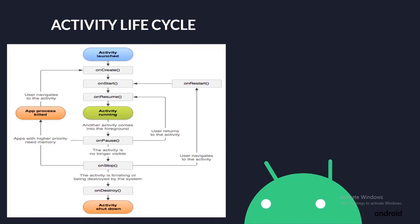The several methods in the Activity Life Cycle are: OnCreate — you perform basic application startup logic that should happen only once for the entire life of an Activity. In the OnStart method, the call makes the Activity visible to the user as the app prepares for the Activity to enter the foreground and become interactive. In the OnResume method, when an Activity enters the Resume state, it comes to the foreground and the system invokes the OnResume method.